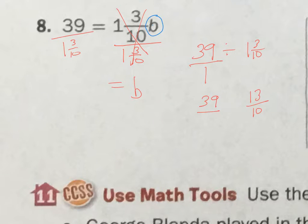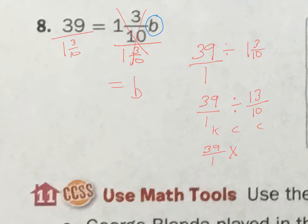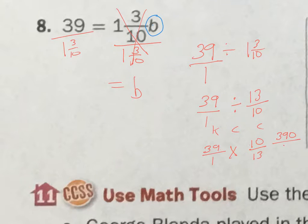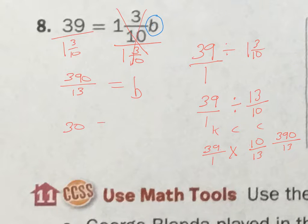It's divided by 13 over 10. You've got to remember: to divide fractions, you keep, change, change. So I'm going to keep 39 over 1, change that to multiplication, and change 13 over 10 to 10 over 13. Now I have 39 times 10 is 390, and 1 times 13 is 13. So b equals 390 divided by 13. On the calculator, that gets me b equals 30.